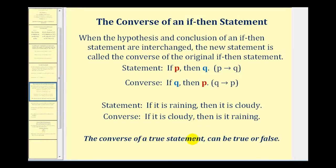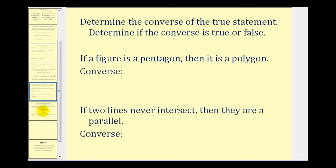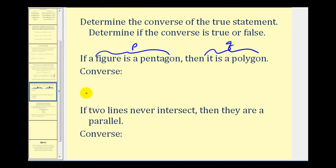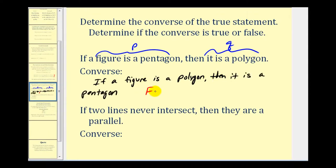The converse of a true statement can be true or false. It is true that if it is raining then it is cloudy, because rain comes from clouds. However, 'if it is cloudy then it is raining' would be false, because it is possible to be overcast but not raining. For the conditional 'if a figure is a pentagon then it is a polygon,' the converse is 'if a figure is a polygon then it is a pentagon,' which is false — a triangle is a polygon but not a pentagon, giving us our counterexample.